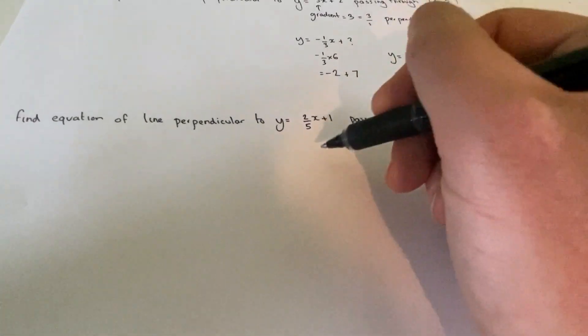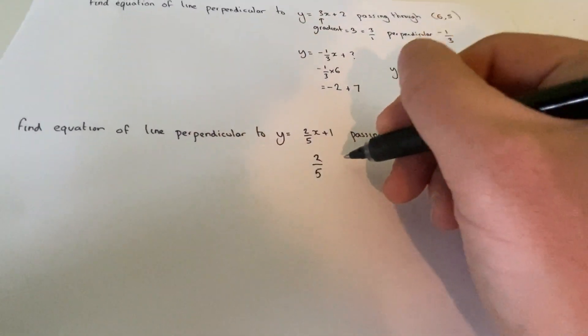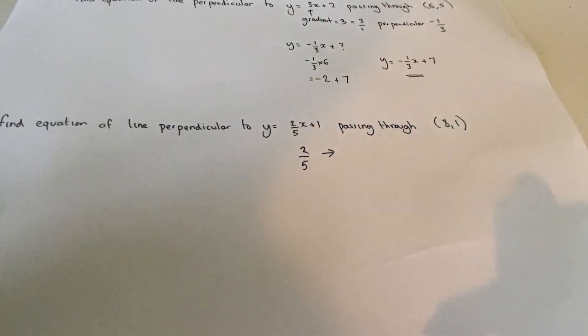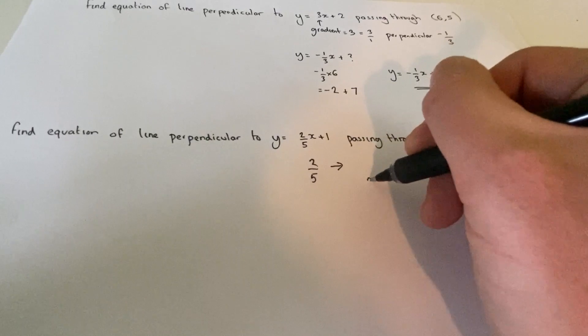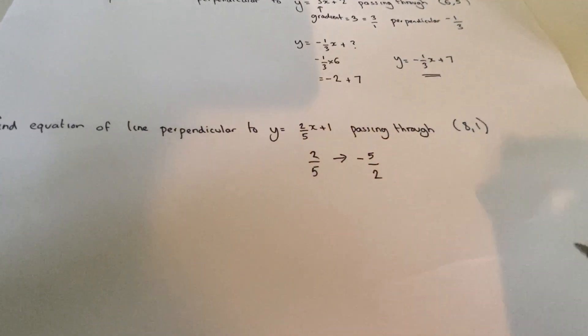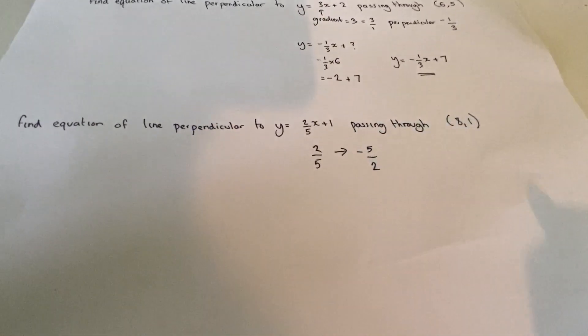That means that for every 5 across, we go 2 up. But to make it perpendicular, then rather than across 5 up 2, we now go across 2, but down 5. So again, the gradient effectively flips or reciprocates and becomes negative.